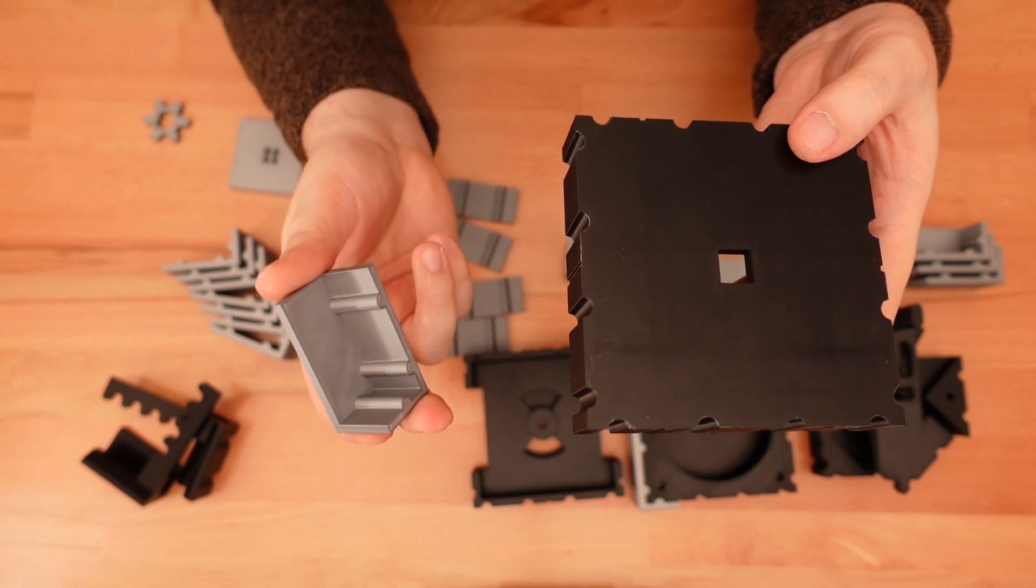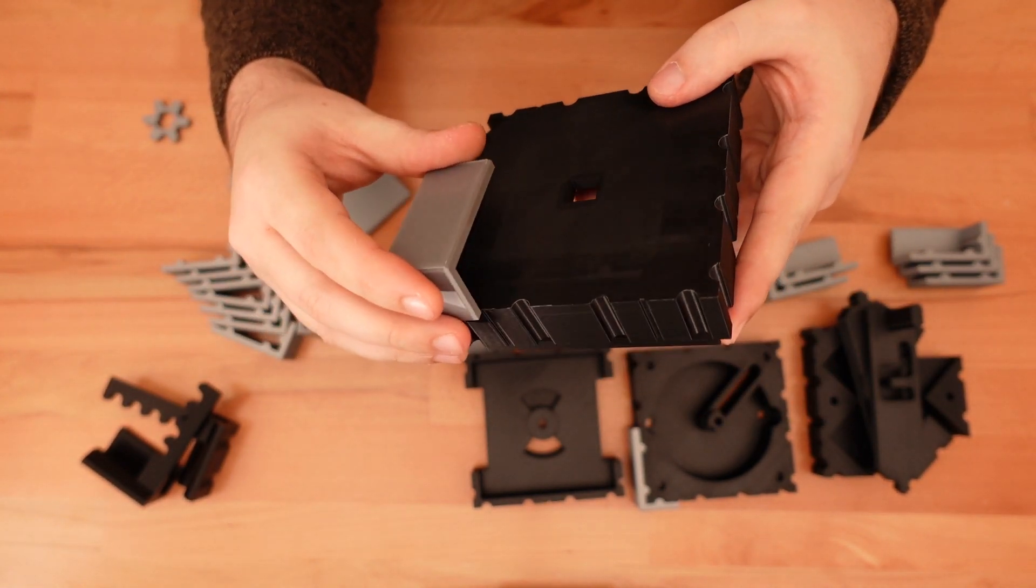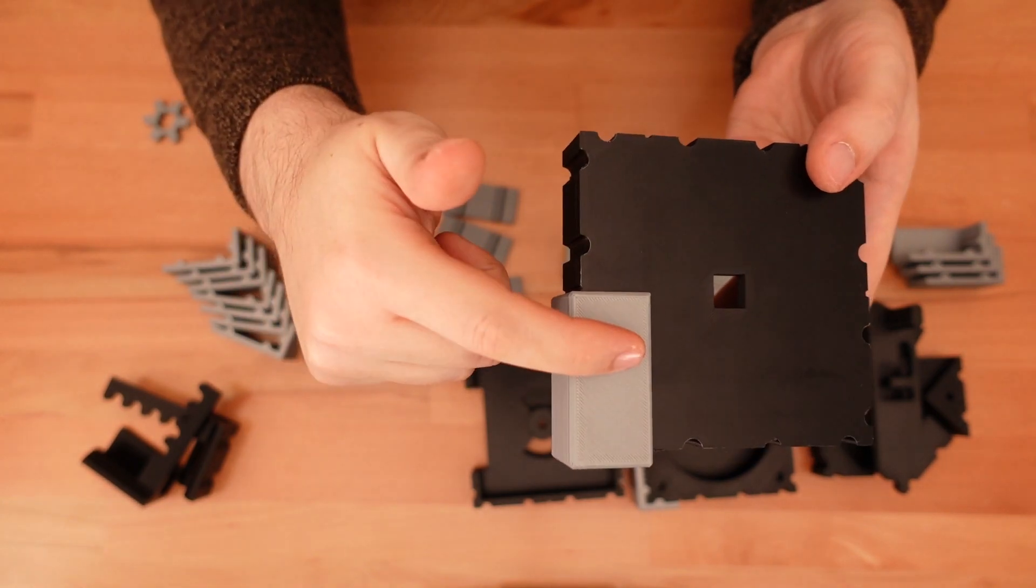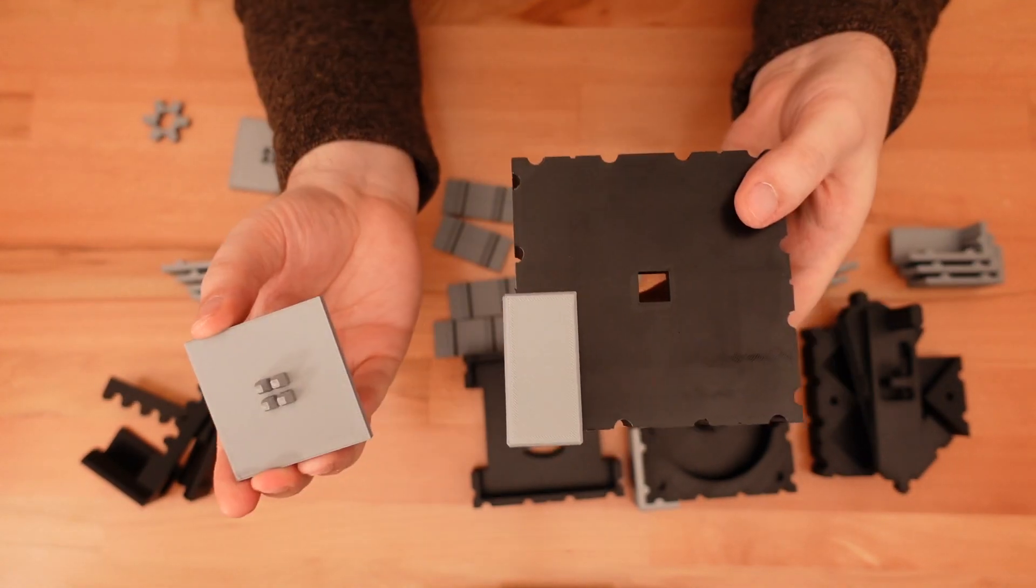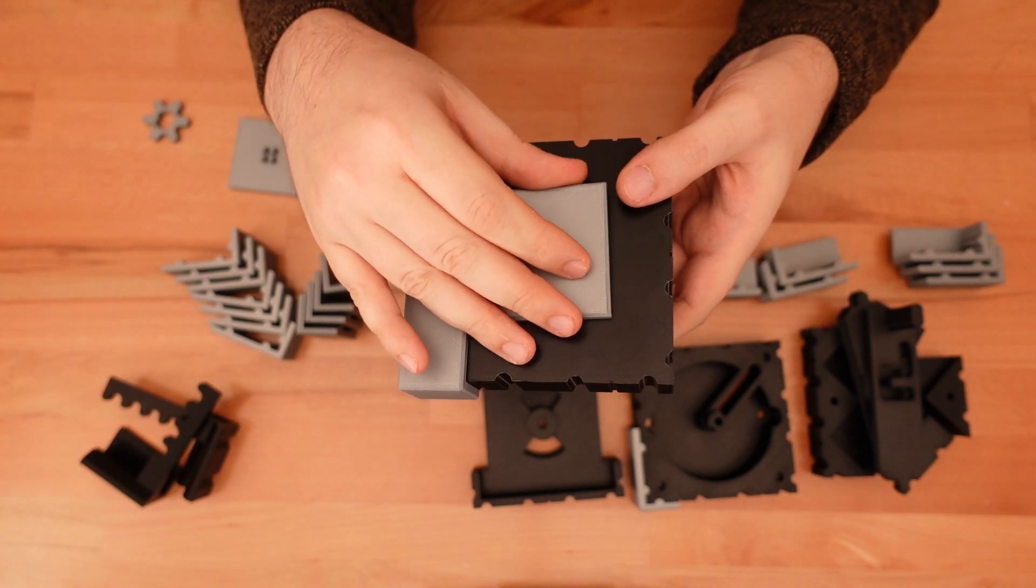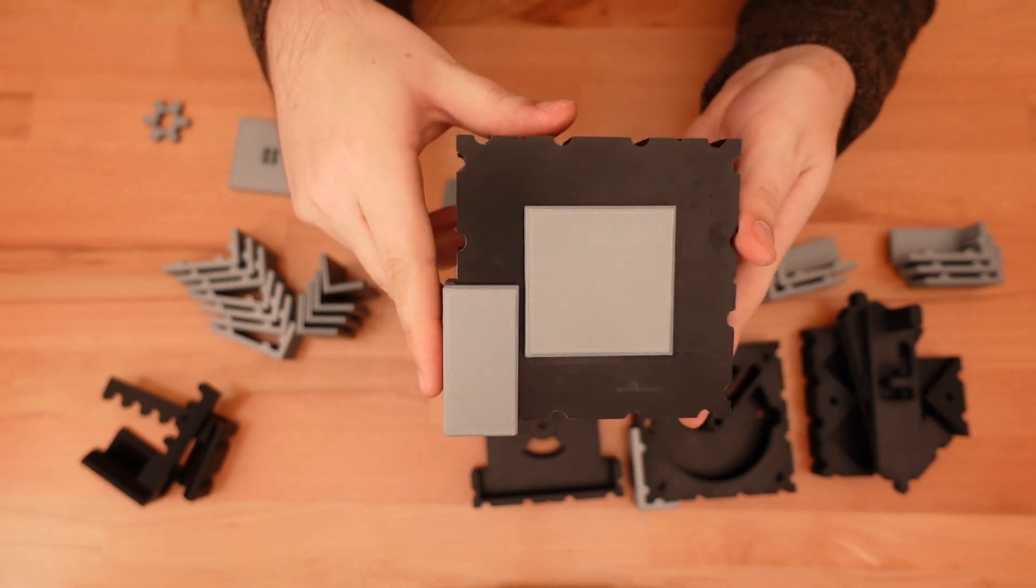They use these end bricks, which when you snap them on, wrap around above and below the level. They also take these center bricks, which snap into this small square hole, like so.